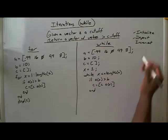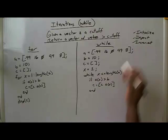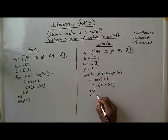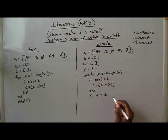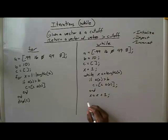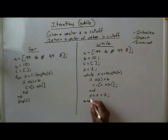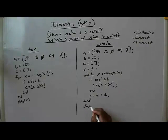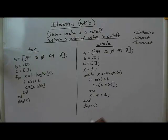Before we end the while loop, we must do our third thing: increment our loop variable. So x equals x plus 1. Now we're finished with our while loop, and then we can display C.